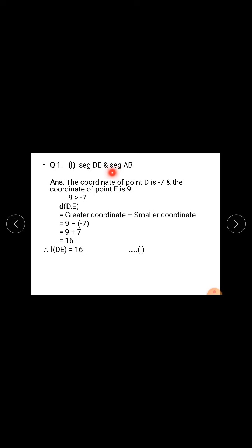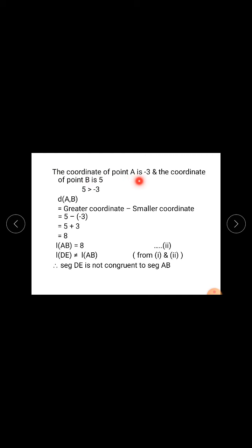Next, find length AB, which means distance AB. The coordinate of point A is minus 3 and the coordinate of point B is 5. Since 5 is greater than minus 3, distance AB equals greater coordinate minus smaller coordinate: 5 minus (minus 3). Minus minus means plus, so 5 plus 3 equals 8 units. Distance AB is 8 units, meaning length AB is 8 units. This is equation 2.